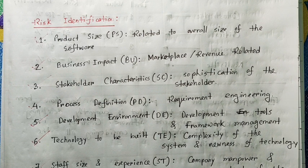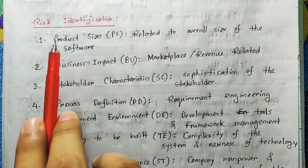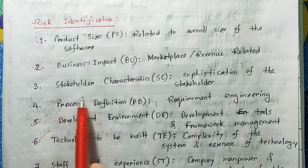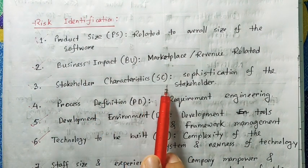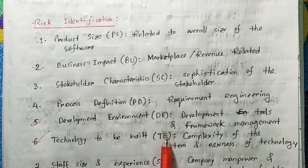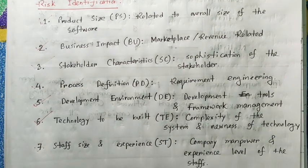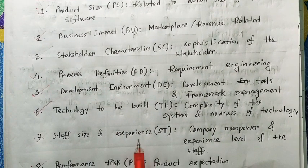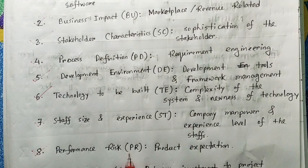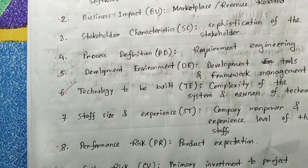The risk estimation factor — we will look at the first category. We have one category, which is the product side, PS; business, BU; stakeholder characteristics; product definition, PD; development environment, DE; technology to be built, TE; step size; experience, ST; performance risk, PR.